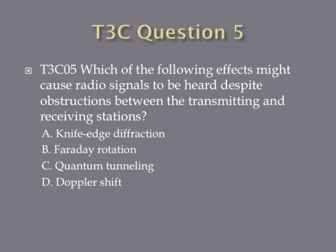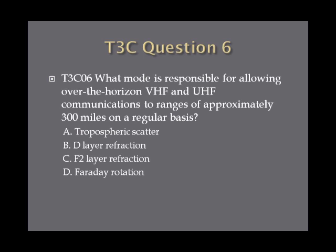Question 5. Which of the following effects might cause radio signals to be heard despite obstructions between the transmitting and receiving stations? A. Knife edge diffraction. B. Faraday rotation. C. Quantum tunneling. D. Doppler shift. Question 6. What mode is responsible for allowing over-the-horizon VHF and UHF communications to ranges of approximately 300 miles on a regular basis? A. Tropospheric Scatter. B. D-layer refraction. C. F2 layer refraction. D. Faraday rotation.